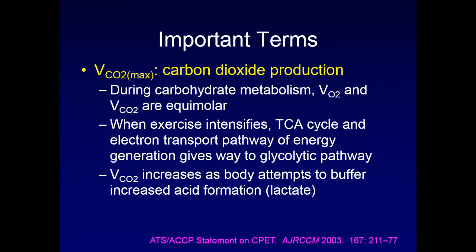The next term is VCO2, or carbon dioxide production. During carbohydrate metabolism, oxygen uptake and VCO2 are equimolar — it takes roughly one molecule of oxygen to produce one molecule of carbon dioxide, which is what happens during aerobic metabolism. If people go into anaerobic metabolism and use the glycolytic pathway to create lactate, the VCO2 will increase as it attempts to buffer the increased lactic acid formation.